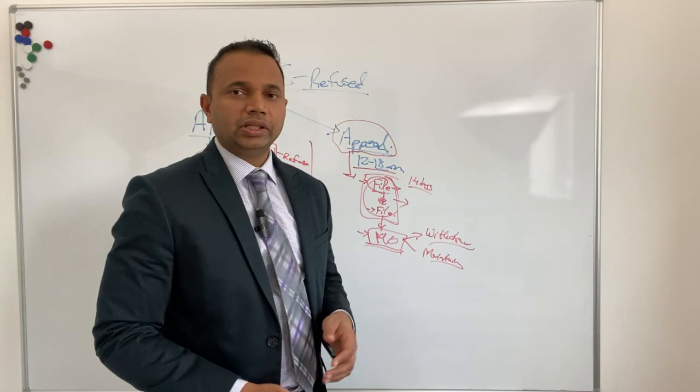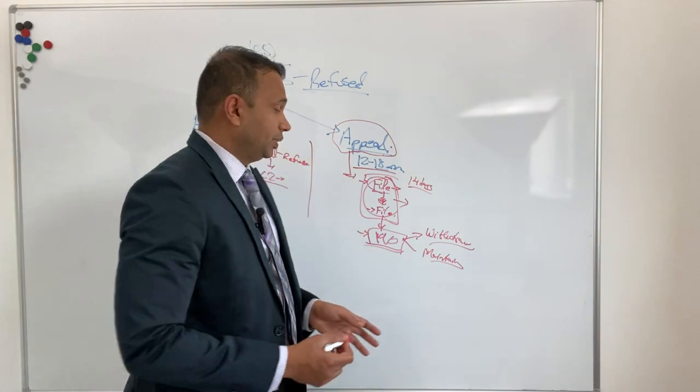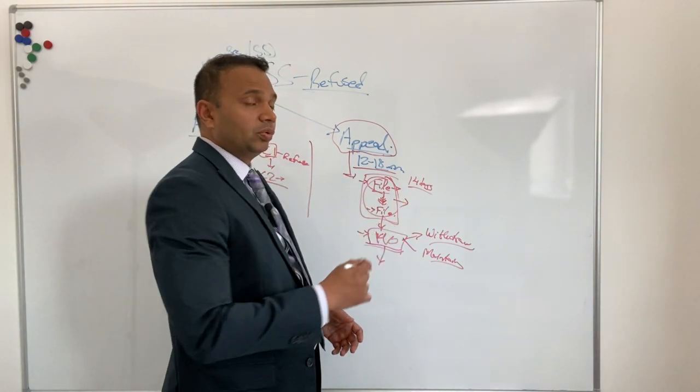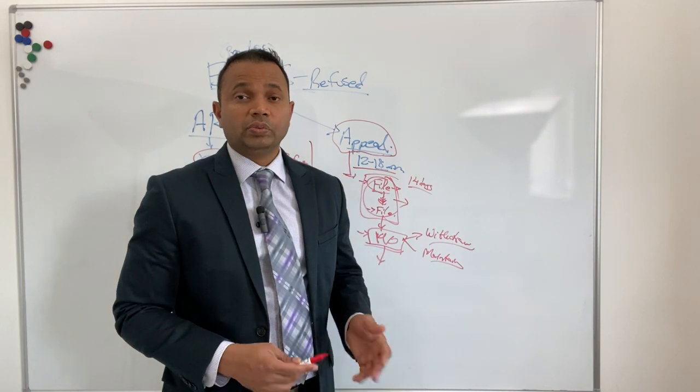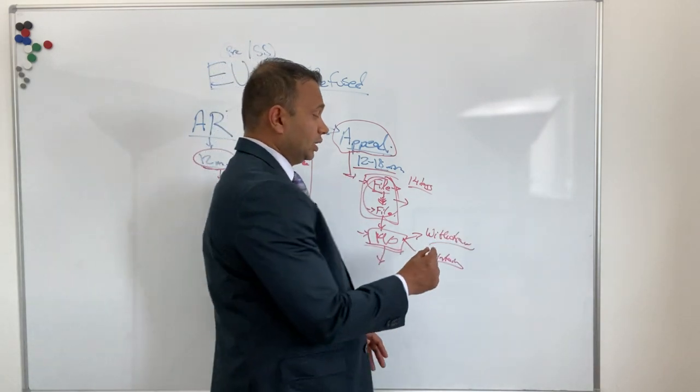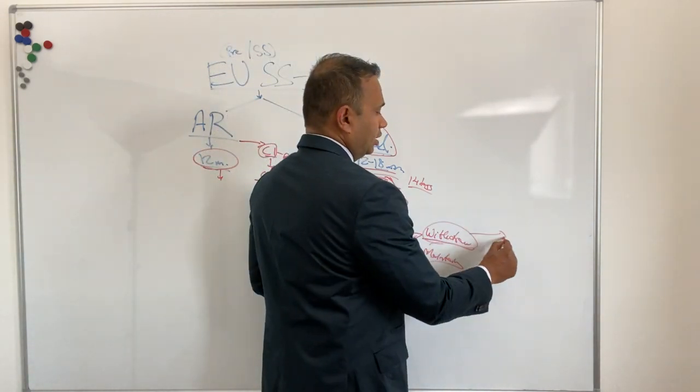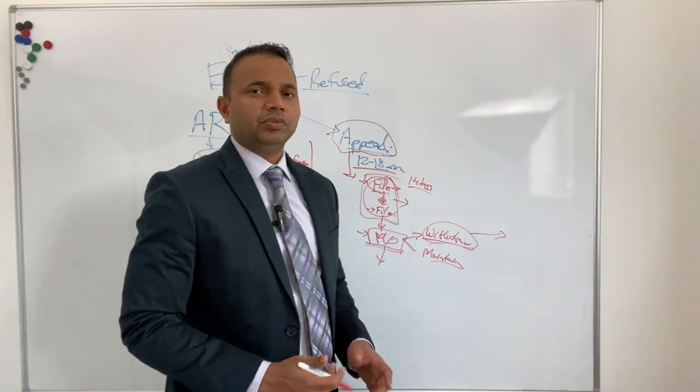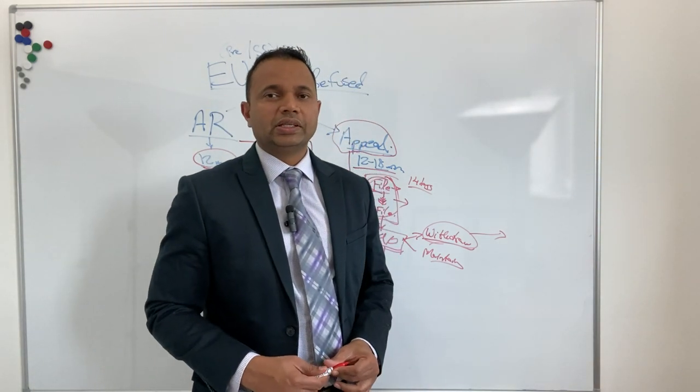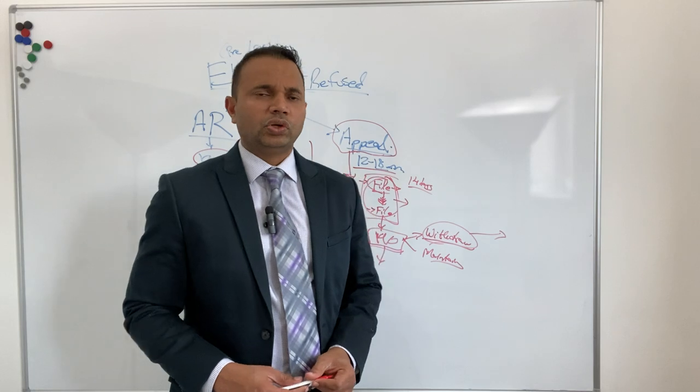If they decide to withdraw, the appeal will not go forward. Then Home Office will have to make a new decision. They may ask for more documents. That is one chain of thought that may happen. It's quite rare unless it's a very obvious error and Home Office lawyers don't want to pursue it.